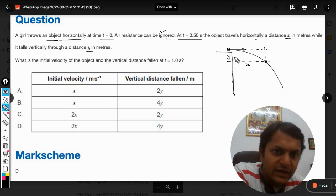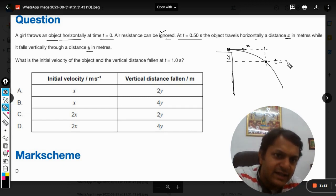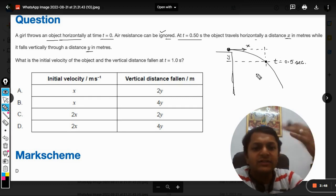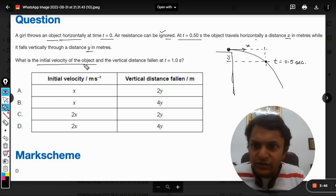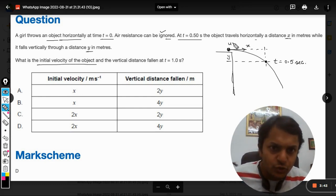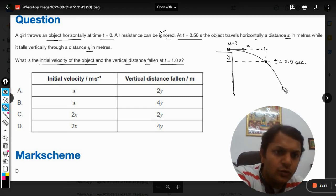Okay, so this is case number one and the time is 0.5 seconds. Now what is the question? What do we need to do? What is the initial velocity of the object? So this u is unknown to us, and the vertical distance fallen at t equals one second.